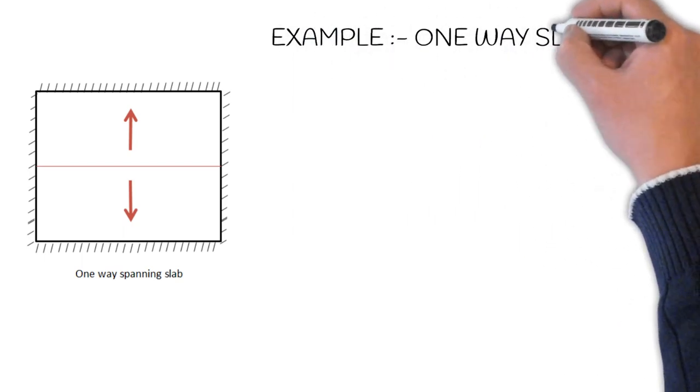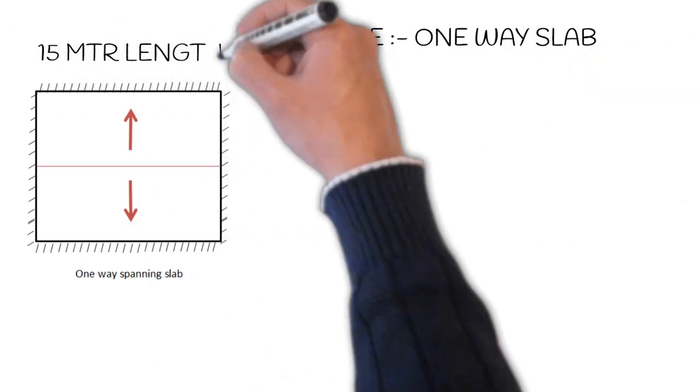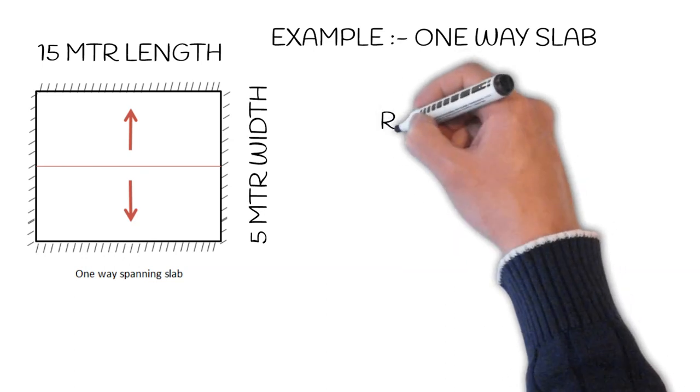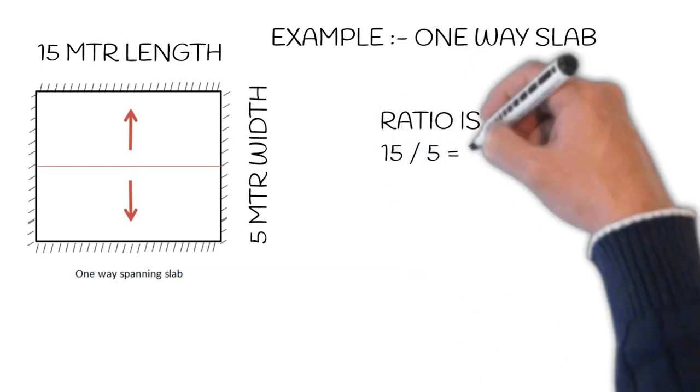Take a slab 15 meter by 5 meter, where 15 meter is length and 5 meter is width. That is, 15 meter is longer span and 5 meter is shorter span. So 15 divided by 5 is 3, which is greater than two, so it will be considered as one-way slab.